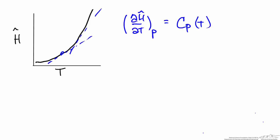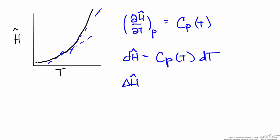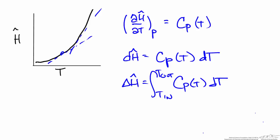If we want to calculate a finite change in specific enthalpy over our temperature interval we can rewrite this expression as a differential equation. So we can write dH is equal to the heat capacity, which is a function of temperature, times dT. If we integrate this expression from the inlet to the outlet condition we can obtain a change in specific enthalpy equal to the integral from T_in to T_out of the heat capacity as a function of temperature with respect to T.